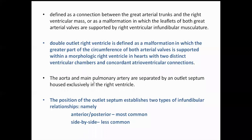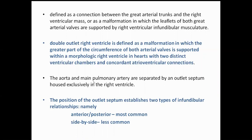This definition will further redefine that part of the circumference of both the arterial valves are supported with the morphological right ventricle in a heart with two distinct ventricular chambers and concordant atrioventricular connections. The aorta and the main pulmonary artery are separated by an outlet septum in the right ventricle.